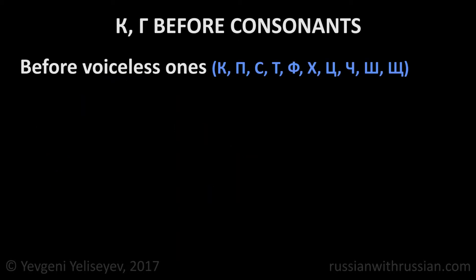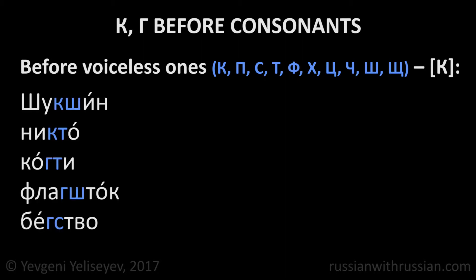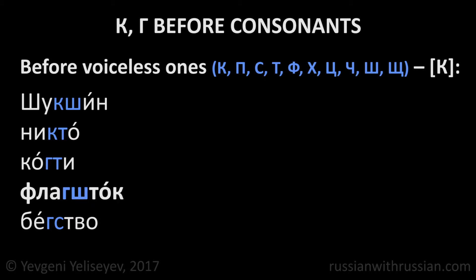Before voiceless sounds, the letters К and Г specify a voiceless sound К. Шукшин, никто, когти, флагшток, бегство.